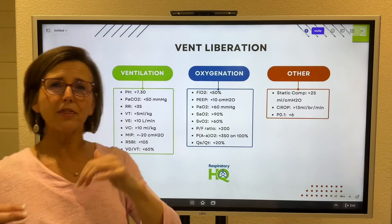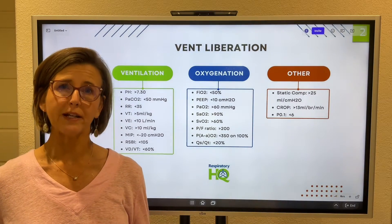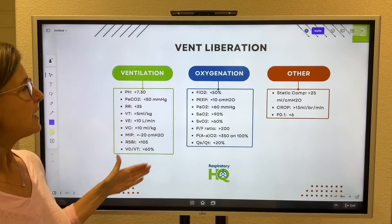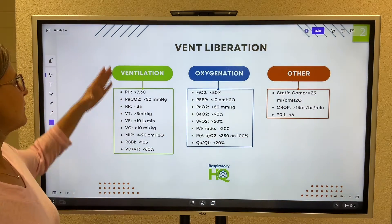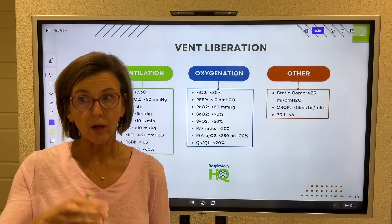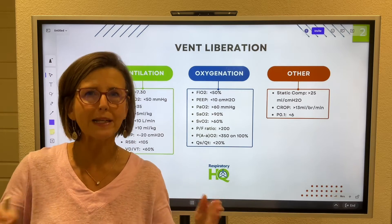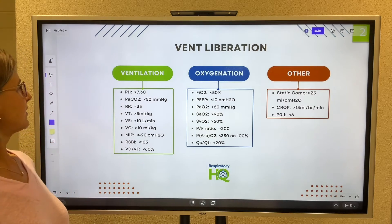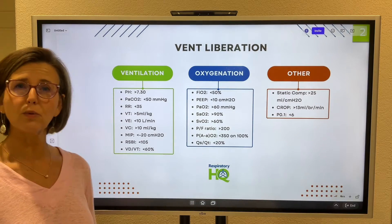When you're in the pre-weaning phase, you need to assess that patient to make sure they're ready to wean. The main things we're going to assess are their ventilation status, their oxygenation status, and some other values. This is where we do the so-called weaning parameters. Weaning parameters should be done before we ever wean — we need to know that the patient is strong enough. Looking at a blood gas and assessing ventilation, that pH should be greater than 7.30 with a CO2 less than 50.